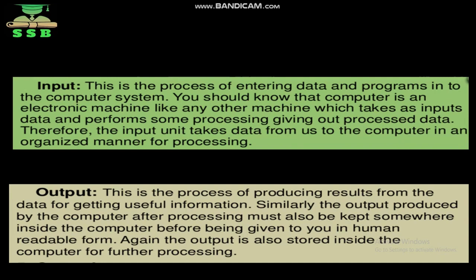Output is the process of producing results from data to get useful information. The output produced by the computer after processing must be stored somewhere inside the computer before being given in human-readable form. After processing input, the computer performs many hardware and software operations, stores data in memory, and then returns results to humans in the form of output.